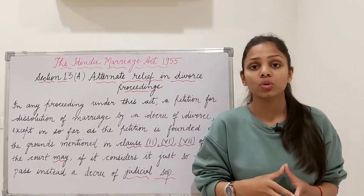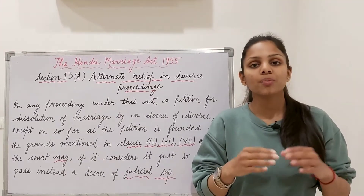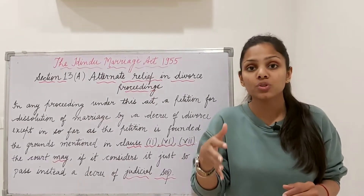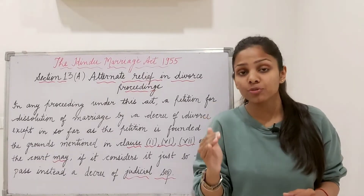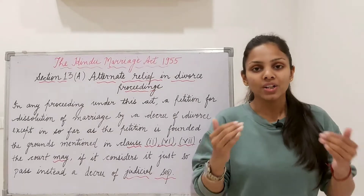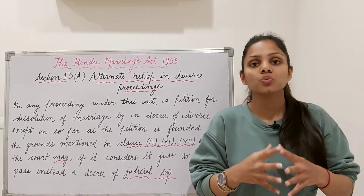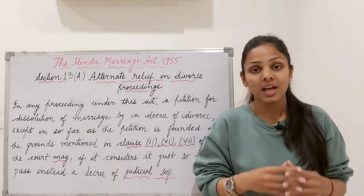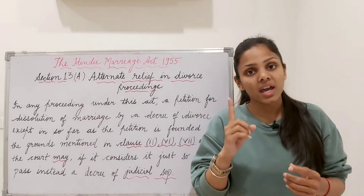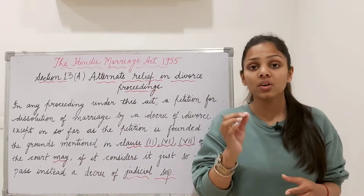Why is alternate relief given? Because judicial separation is a lesser evil than divorce. If after the judicial separation there is reconciliation within one year, then the marriage has been preserved. This is a social aim — to prevent the breakup of marriages. But if after judicial separation the parties are not able to cohabit or resume cohabitation, then it is a clear-cut case of irretrievable breakdown of marriage, making the case for divorce more established.